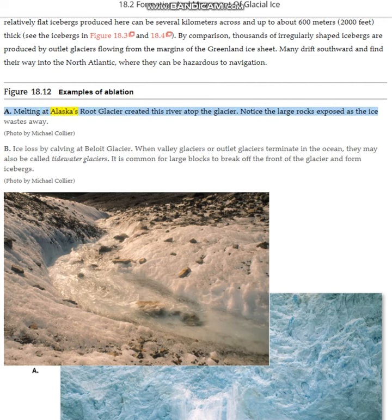Melting at Alaska's Root Glacier created this river atop the glacier. Notice the large rocks exposed as the ice wastes away.